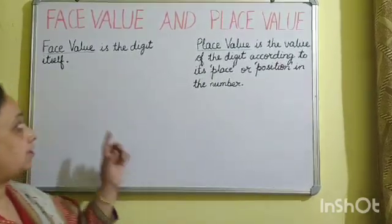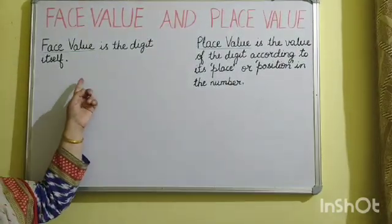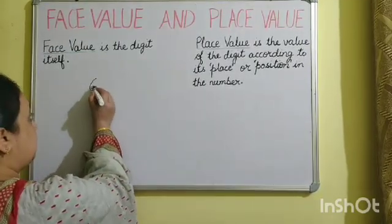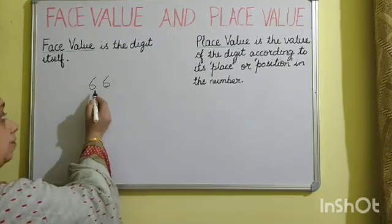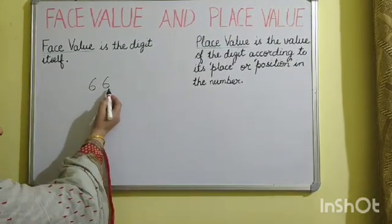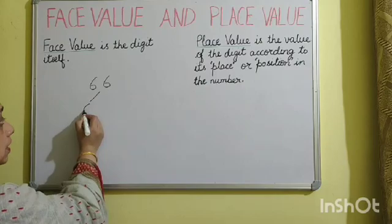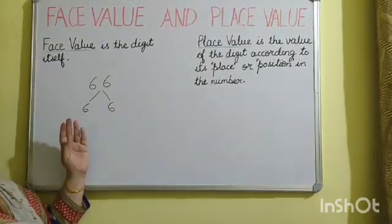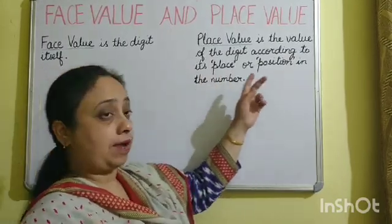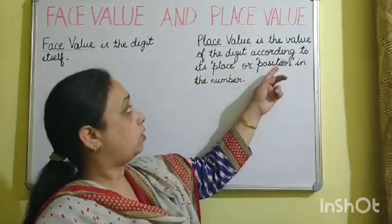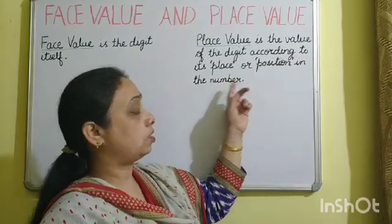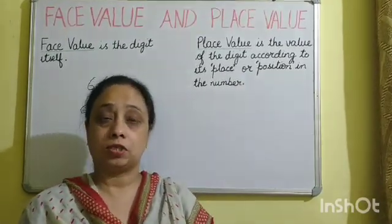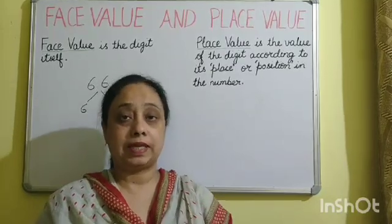What is face value? Face value is the digit itself. Suppose we have a number 66. We have two 6s here, and the face value of both the 6s is 6, no matter what the position of the digit. The place value is the value of the digit according to its place or position in the number. The place value depends on the position where the digit is placed.